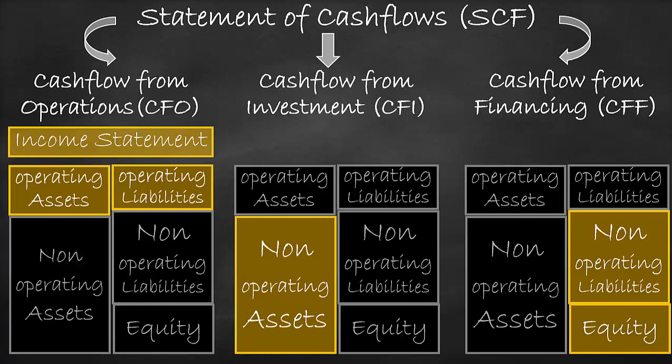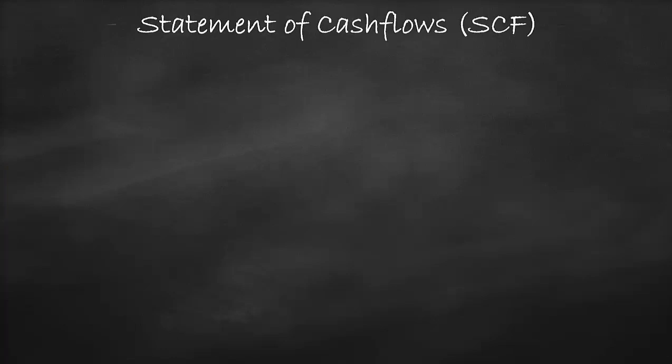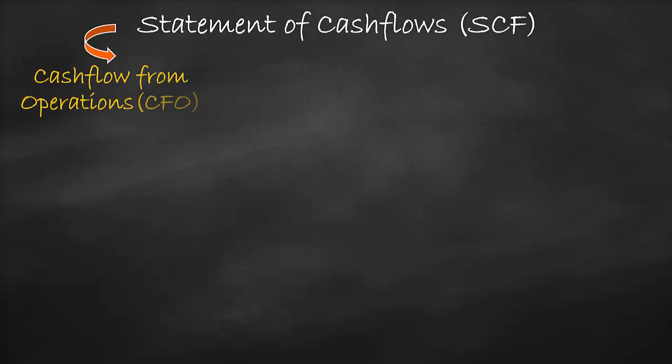Let's write all this in detail. Under the first category, we have the cash flow from operations. We have the bottom line on the income statement, which is represented by net income. Then we add depreciation, because depreciation and amortization are what we call non-cash expenses.